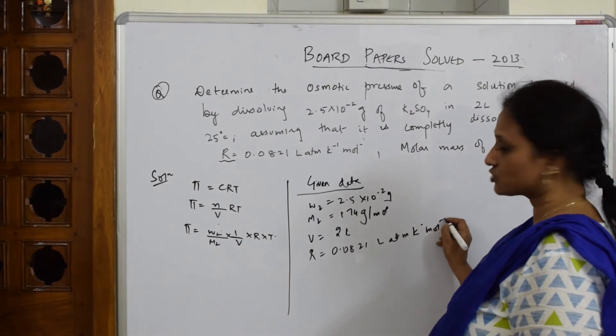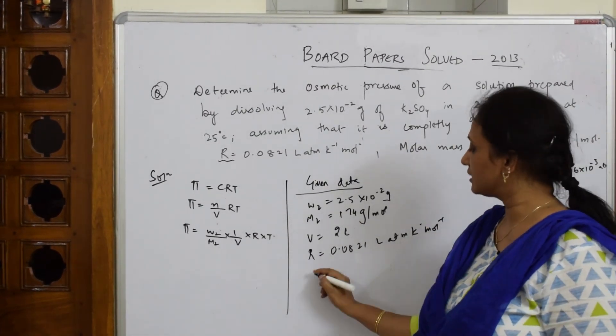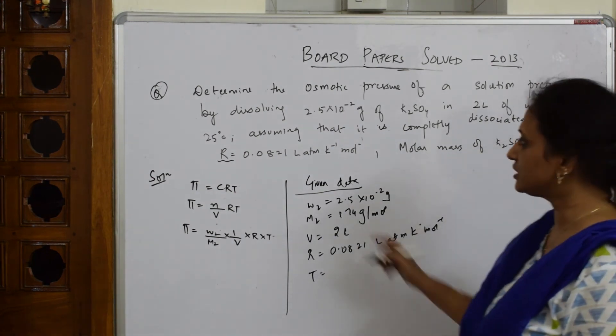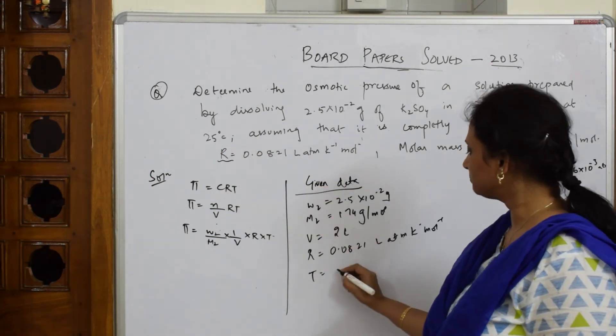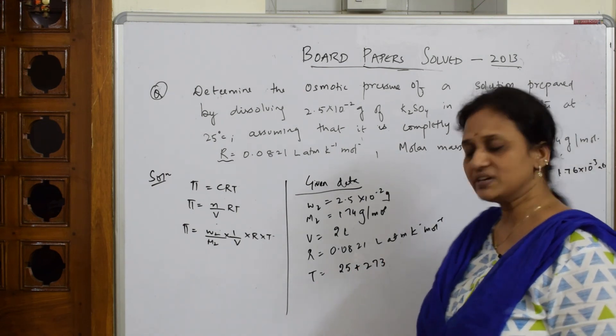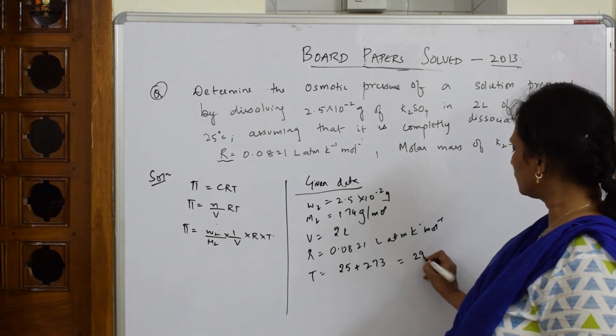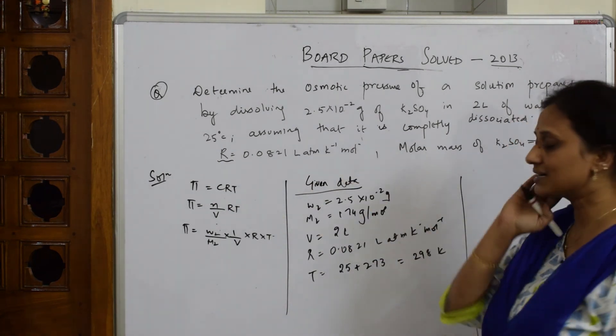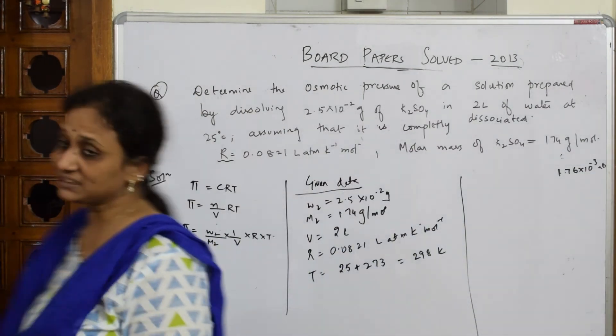Gas constant value given to us: 0.0821 K inverse mole inverse. Please copy along with the units. Then temperature - how much is temperature given? Temperature given to us is only 25 degrees. Now remember, always you have to convert that into Kelvin temperature by adding 273, which makes it 298 Kelvin. Now the data is ready.